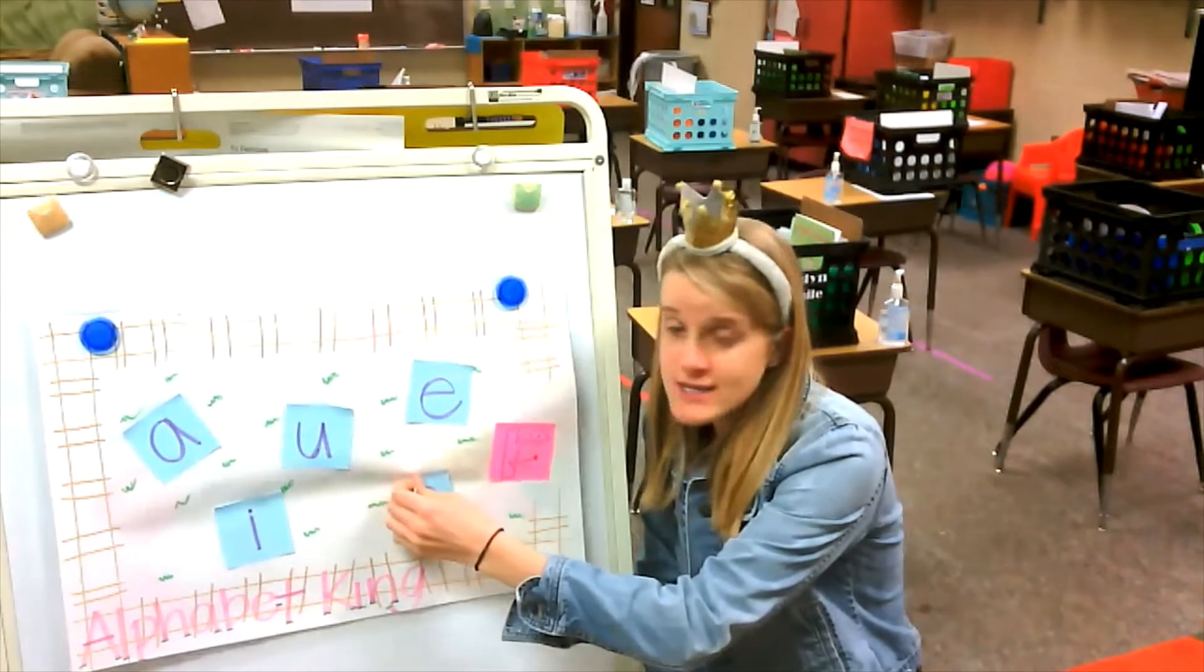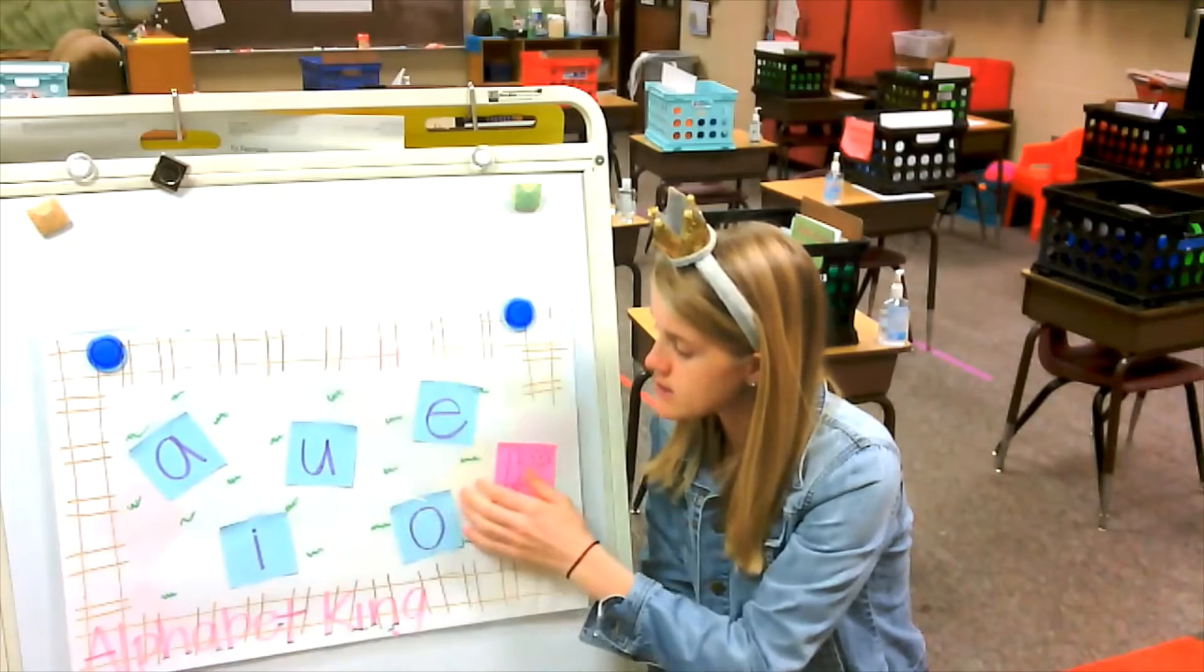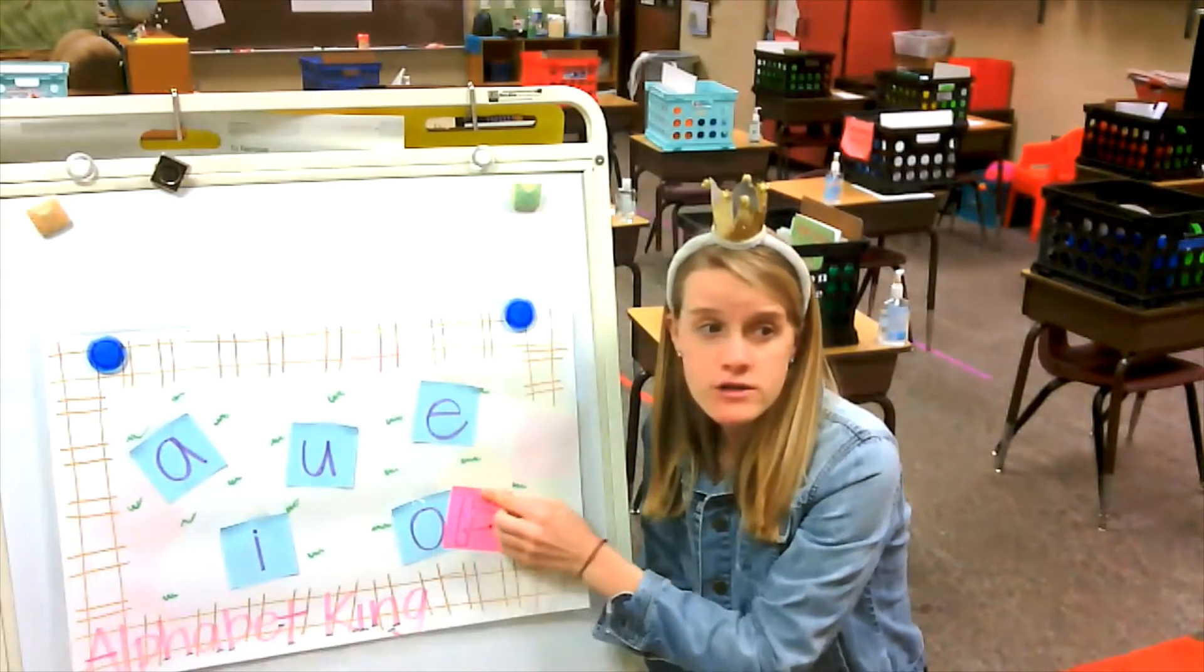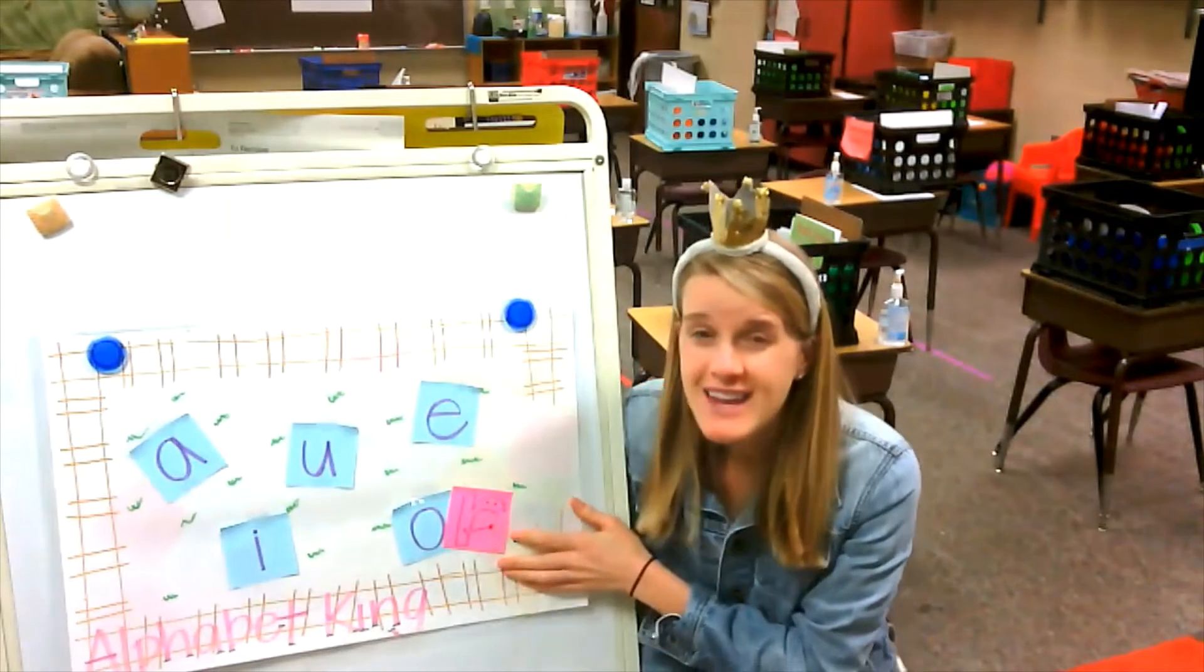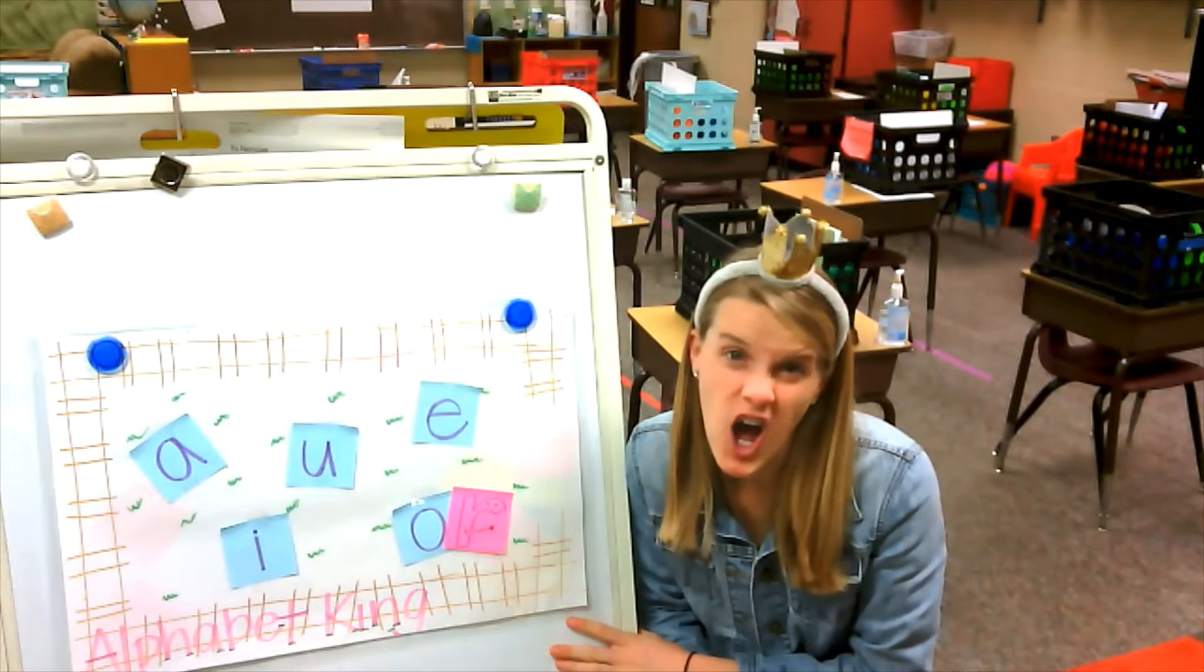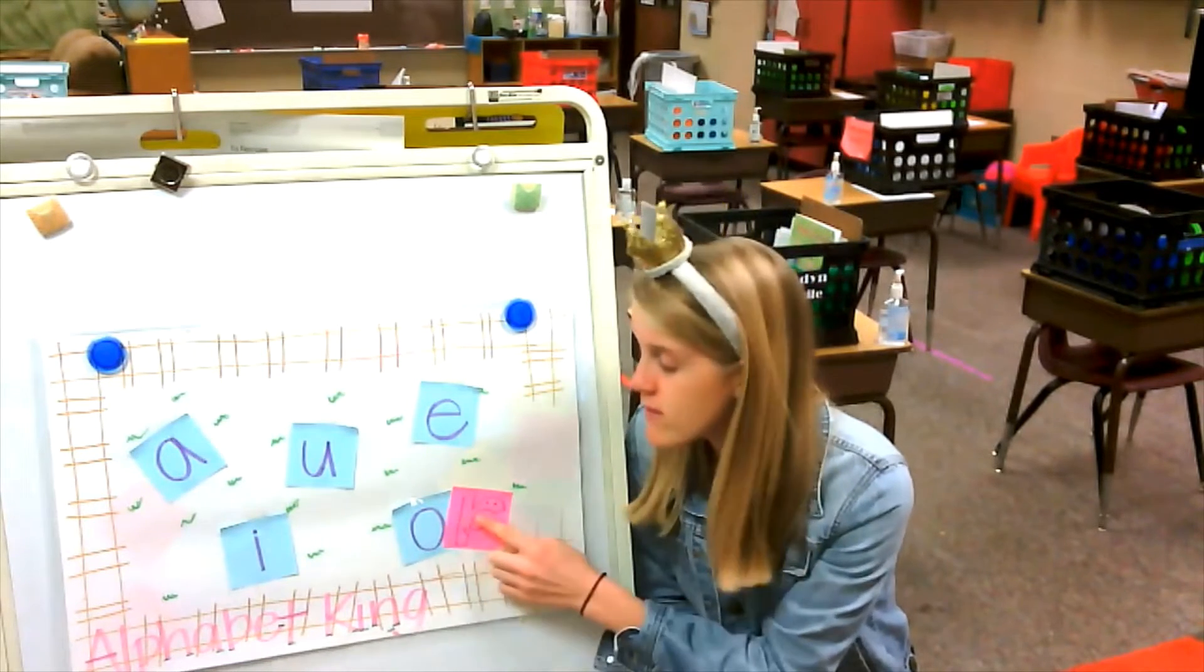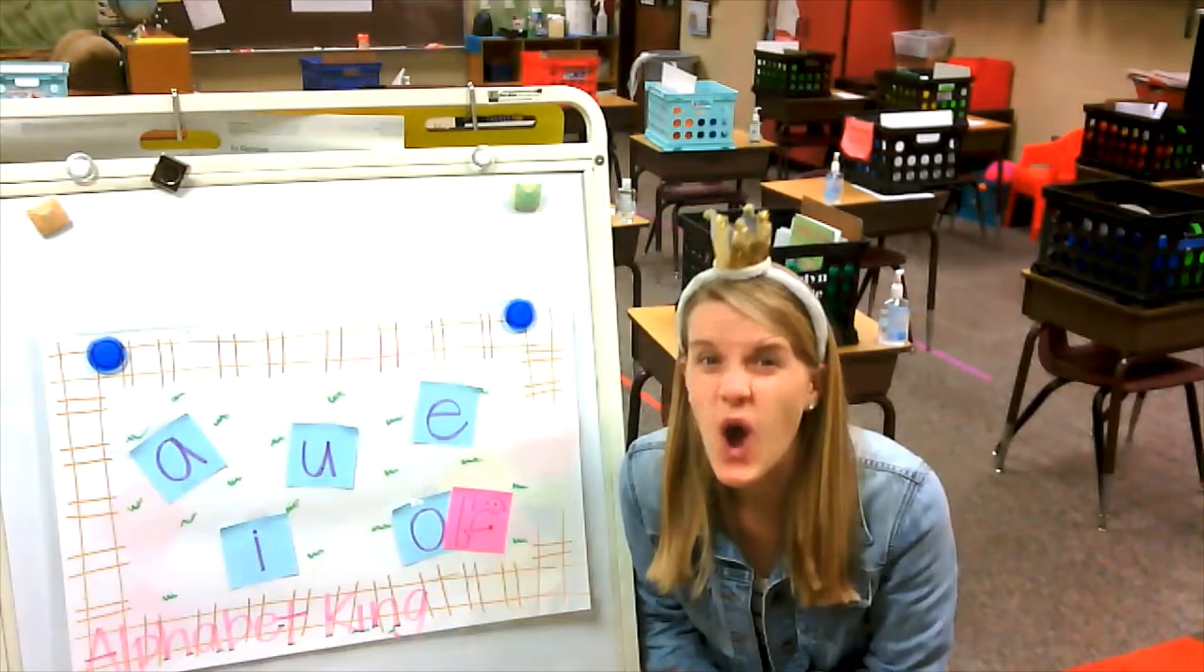So when O tries to get out of the pen and gets in front of R, he says or. R says uh-uh, you're not gonna say ah or oh, you're gonna say or. So when you see O in front of an R, you're gonna have to say or.